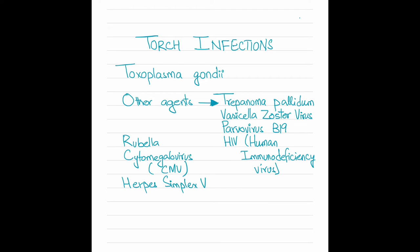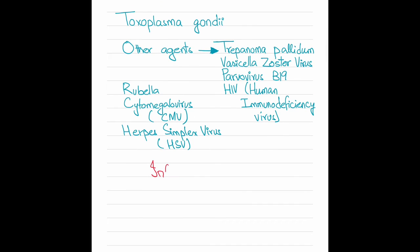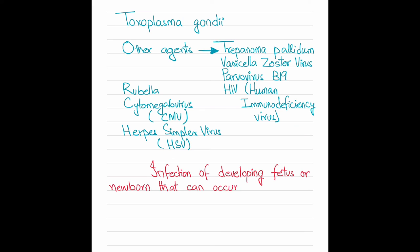So these are the infections that are responsible for 2-3% of all congenital disorders. They are basically infections that are transmitted to the fetus through the placenta, to the infant through the birth canal during delivery, and they can also be passed from the mother to the infant through breast milk and breastfeeding.